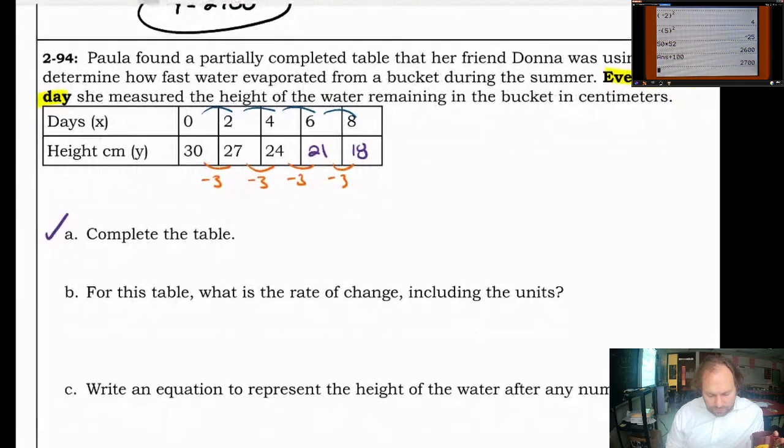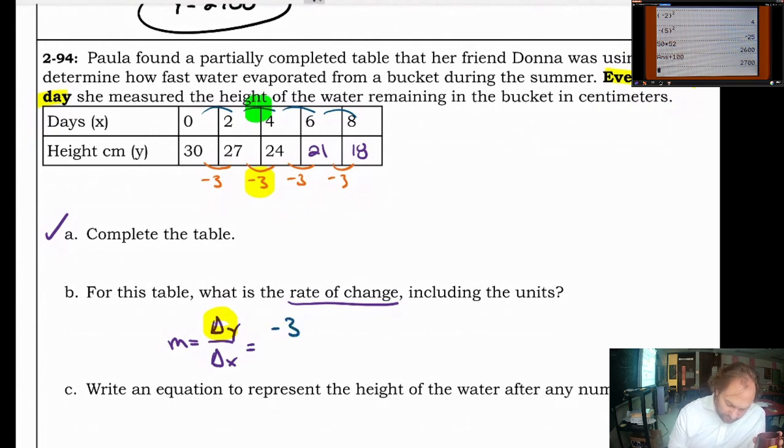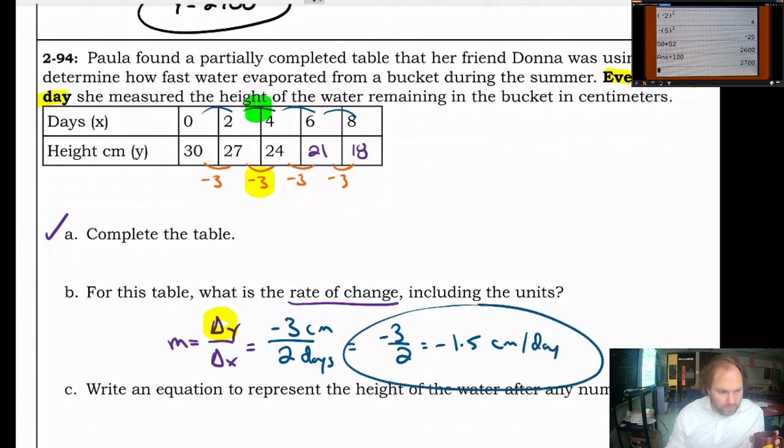For this table what's the rate of change? Rate of change is another way of telling the slope. M is equal to the change in Y divided by the change in X. We've got to be careful here because both of those things are changing. The nice thing is we kind of already know them. The change in Y is negative 3 and the change in X is the plus 2 that's happening every time. So we're losing 3 centimeters of water, sorry, negative 3 centimeters every 2 days. Would be a good way to think about this. So it's negative 3 over 2 or negative 1.5 centimeters per day. I recommend the fraction version though for this answer.